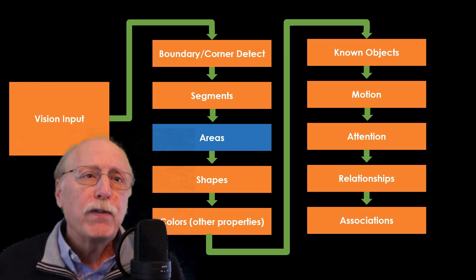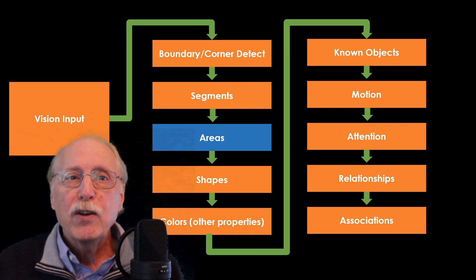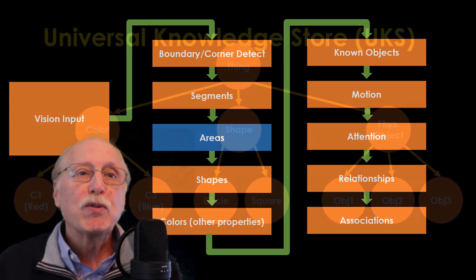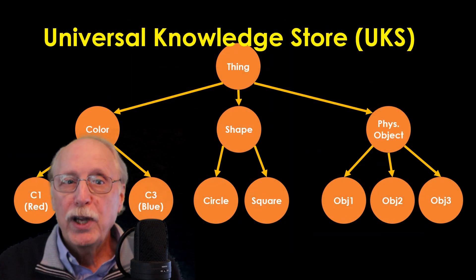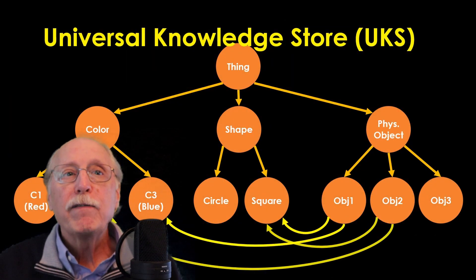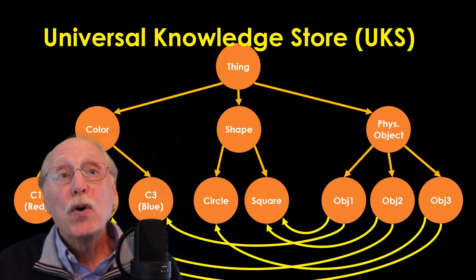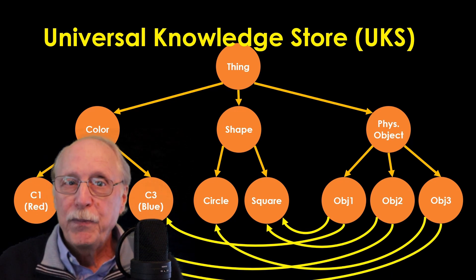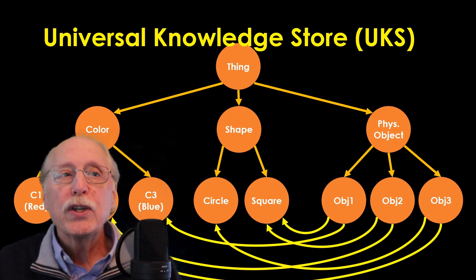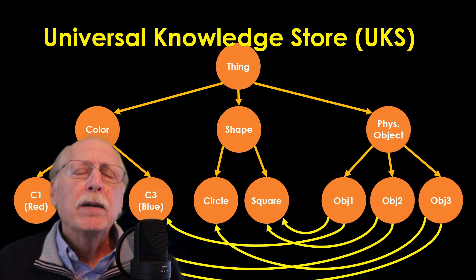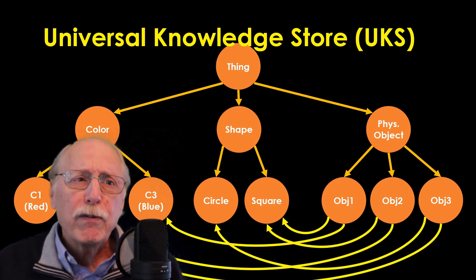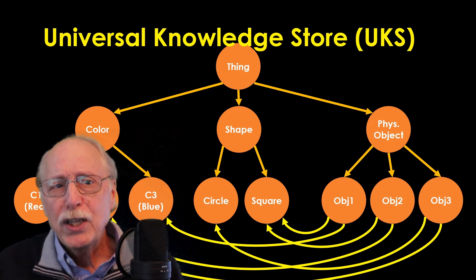After the first few, though, rather than being neuron-based, the remaining steps rely on the universal knowledge store, which is a graph data structure of nodes connected by edges. Although often considered symbolic AI, graphs are not really so different from neurons connected by synapses.